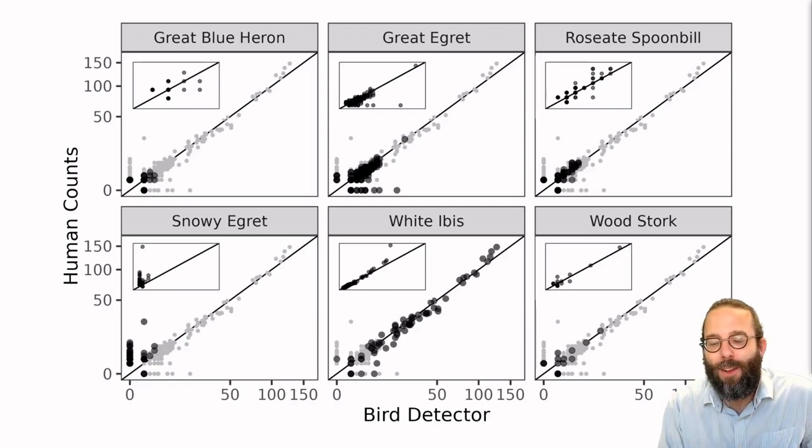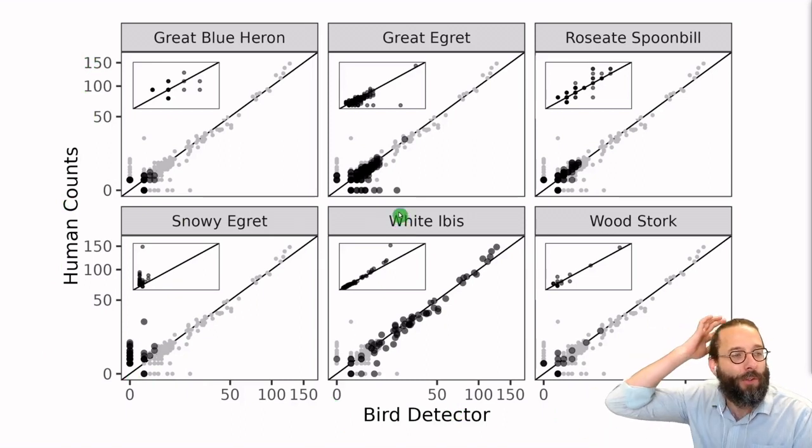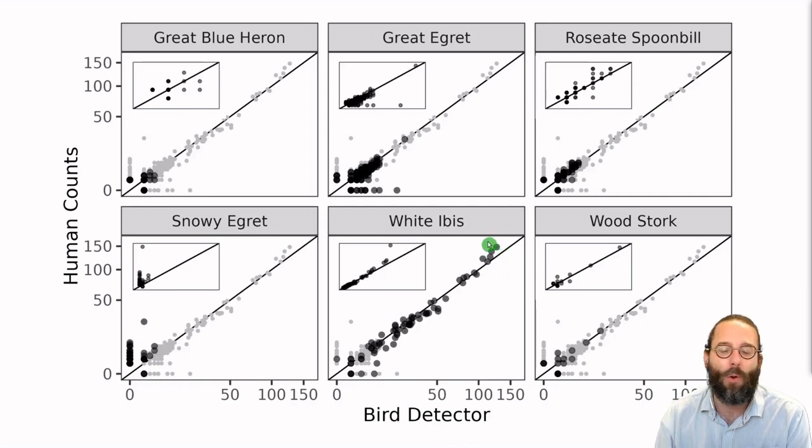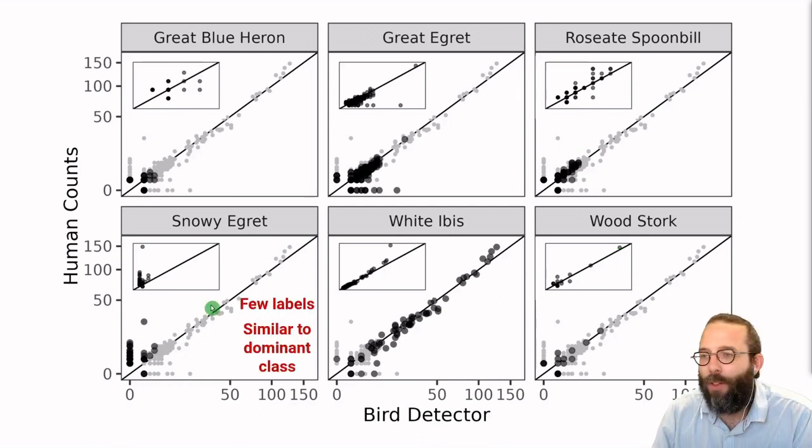We can also do the same thing while counting individual species. So this is the same figure as before, machine counts on the X, human counts on the Y. We've broken things out by species now. The species classification, precision, and recall is generally quite good, which leads to good counts of individual species. And so we can do a good job of estimating population sizes, with the exception of our friend the snowy egret down here, which is a common difficult problem in computer vision. We've got few labels combined with the fact that it looks very similar to white ibis, which is the dominant class in this data set. And so we're working on some things here, but this is a tough problem to get around.